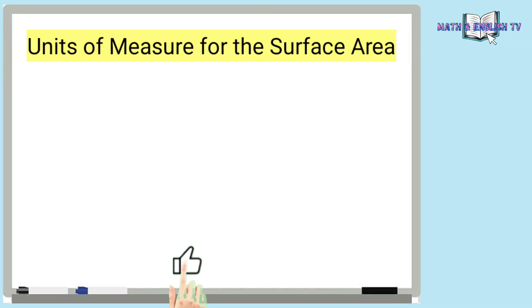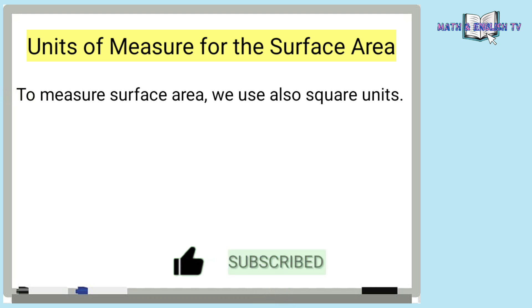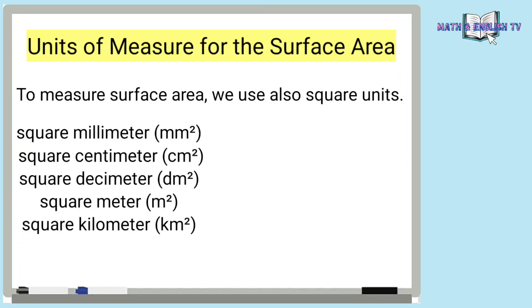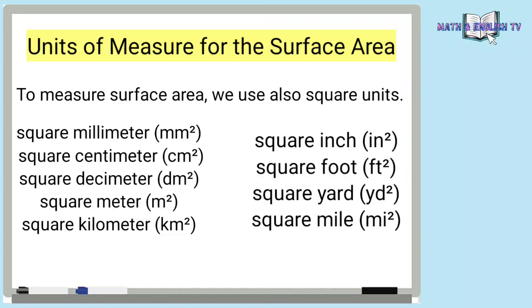Units of measure for the surface area. To measure surface area, we use square units. Ang surface area ay naka-express din sa square units — ibig sabihin, yung unit of measure na ginamit ay naka-raised sa power of 2. Kagaya ng square millimeter, square centimeter, square decimeter, square meter, square kilometer, square inch, square foot, square yard, and square mile. Ito yung mga ginagamit na unit of measures sa pagkuha ng surface area. Nakikita naman ninyo na bawat unit of measure ay mayroong exponent na 2, dahil ang surface area ay naka-express sa square unit.